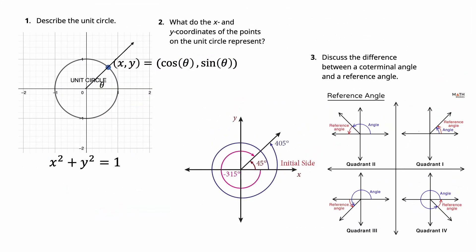Describe the unit circle. A circle — when we talk about the unit circle, we're talking about a circle where 'unit' means radius one, but more specifically radius one centered at the origin at (0, 0). That's the origin zero zero, and so you get this equation for the unit circle, which becomes key when we do identities.